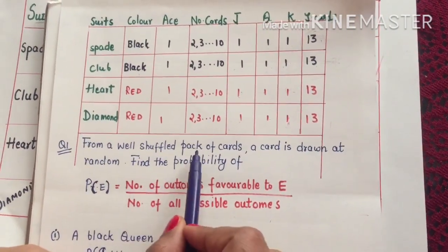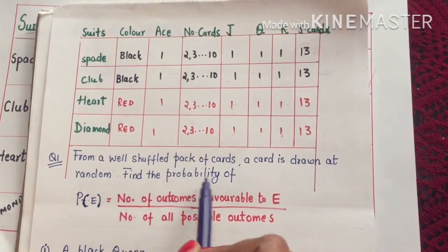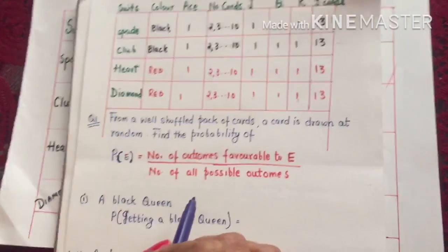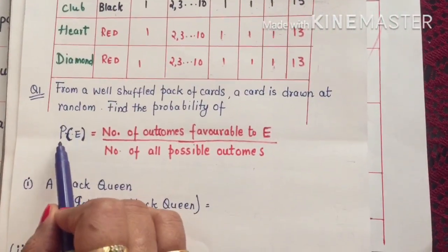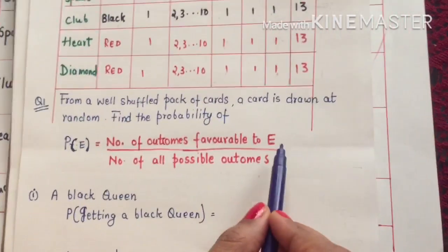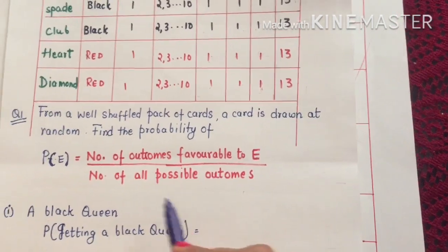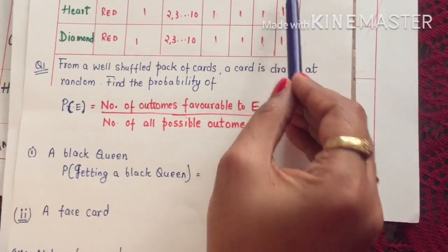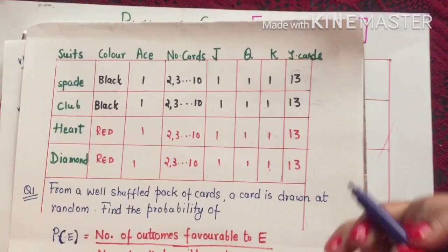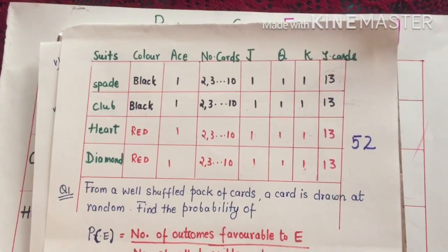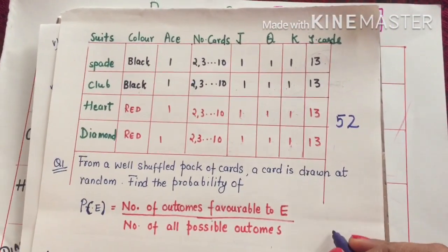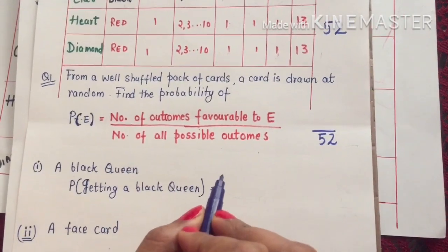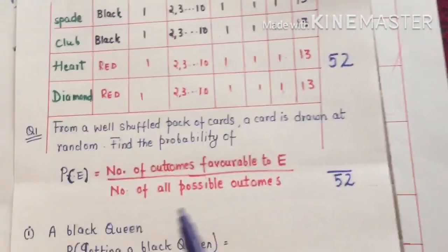Let's solve a question: from a well-shuffled pack of cards, a card is drawn at random — find the probability. Before that, let us revise the formula: probability of an event equals number of favorable outcomes divided by number of all possible outcomes. Since there are 52 total cards, all possible outcomes will be 52.